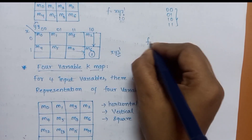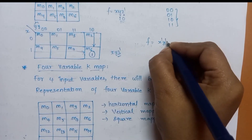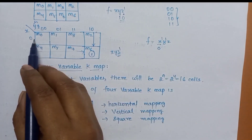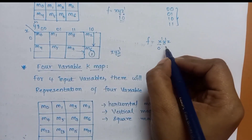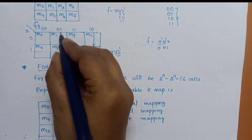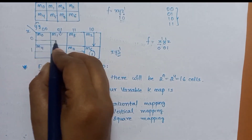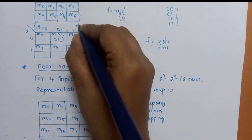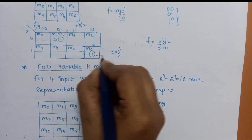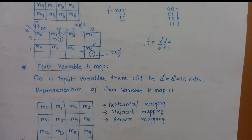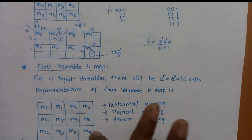So for F equal to x'y'z, x equals 0 gives us the first row, and y' z — y equals 0, z equals 1 — gives column 01. We place a 1 in that cell. This cell represents x-dash, y-dash, z. Very simple. But when no boolean expression is given and instead we are given numbers for the K-map, we use the minterm numbers directly.